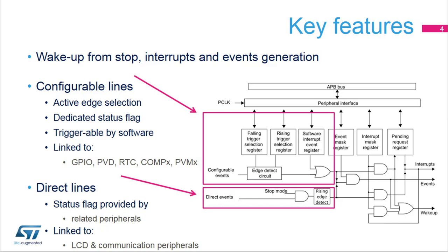Direct Lines are linked mainly with LCD and communication peripherals. Direct Lines can only wake up the processor from stop 0 and stop 1 mode, except those coming from I2C3,